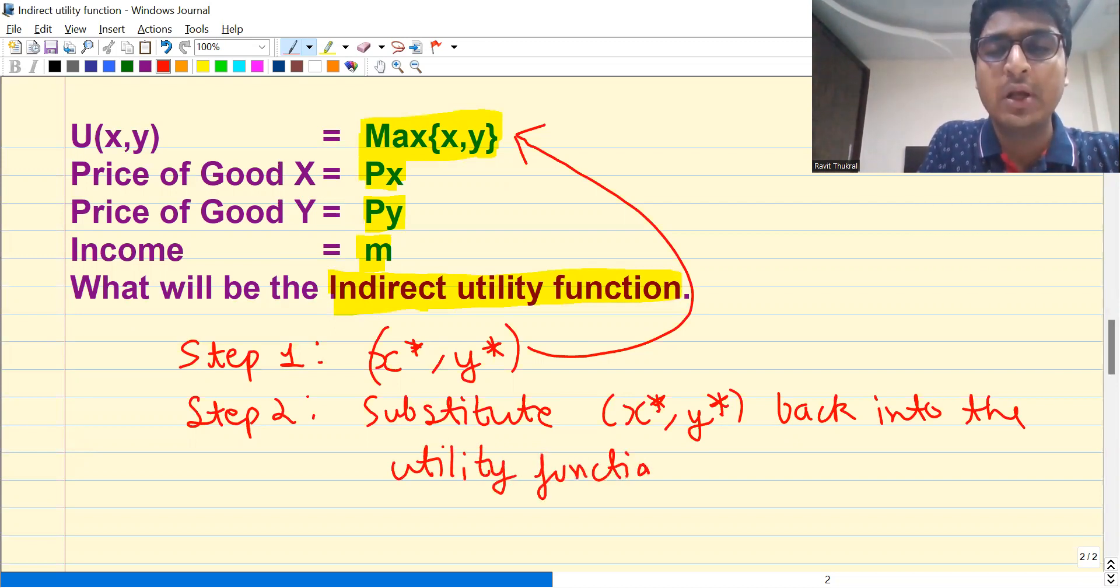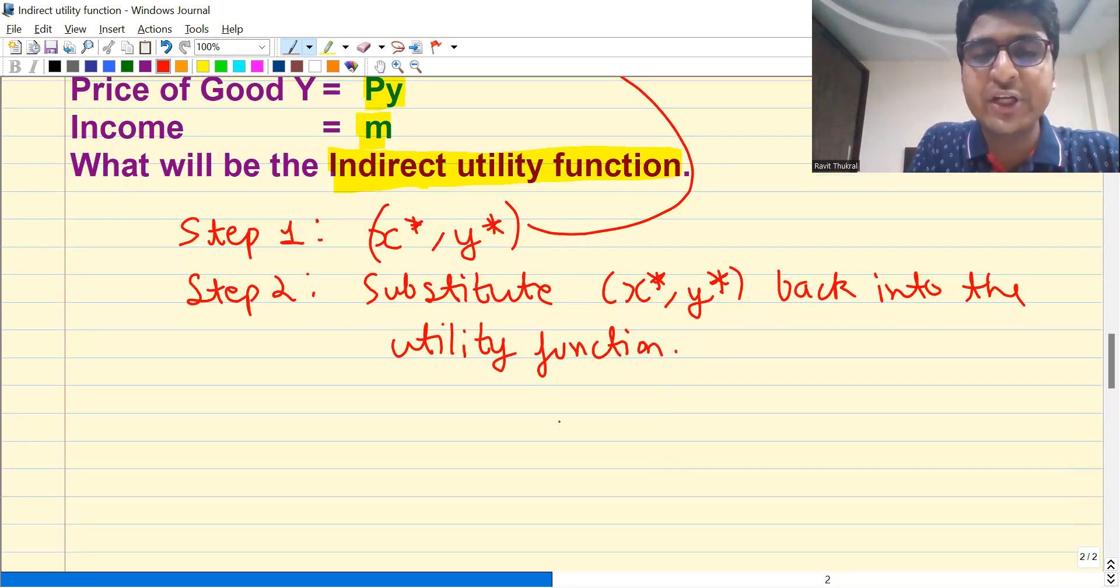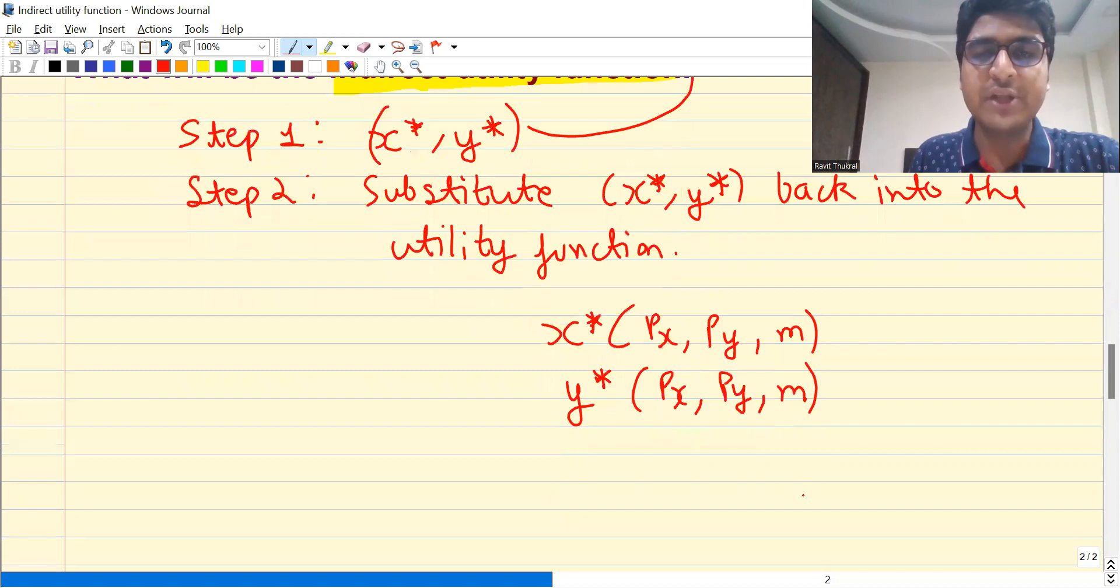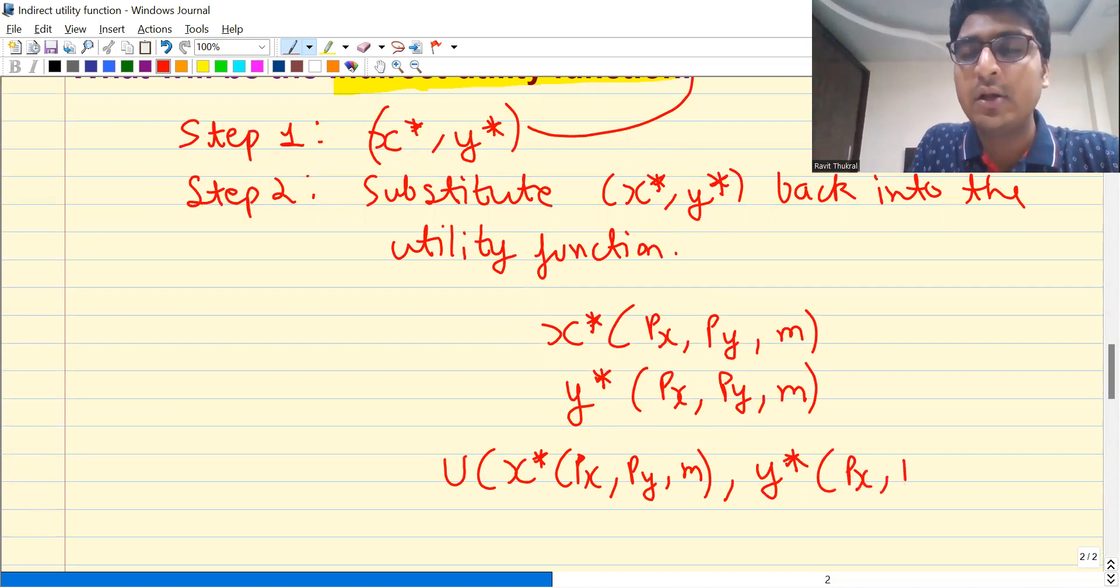We know that in case of Marshallian demand, X star depends upon the prices and income. Similarly, optimal choice of Y also depends upon the prices and income. So this will give you indirect utility function.